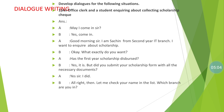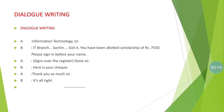Student: Yes sir, I did it in time. Office Clerk: Alright, then let me check your name in the list. Which branch are you in? If your name is there, you will get the scholarship. Student: From Information Technology, sir. Office Clerk: IT branch — Sachin, okay, I got it. You have been allocated a scholarship of rupees 7,550. Please sign before your name. Student: Yes sir. I sign here, done sir.